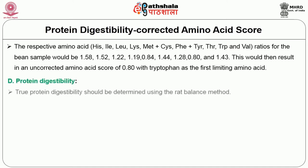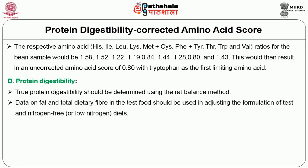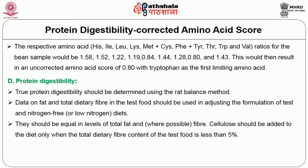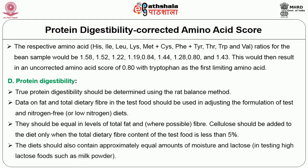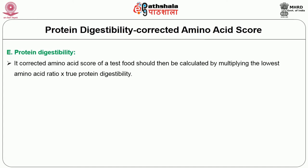The true protein digestibility should be determined using the rat balance method. Data on fat and total dietary fiber in the test food should be used in adjusting the formulation of the test and nitrogen-free diets, which should be equal in levels of total fat and, where possible, fiber. Cellulose should be added to the diet only when the total dietary fiber content of the test food is less than 5 percent. The diet should also contain approximately equal amounts of moisture and lactose when testing high-lactose foods such as milk powder. The PDCAAS is then calculated by multiplying the lowest amino acid ratio by the true protein digestibility.